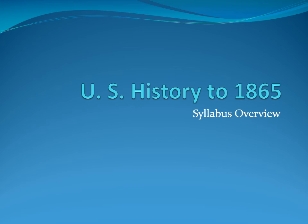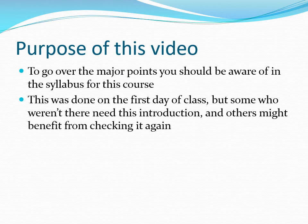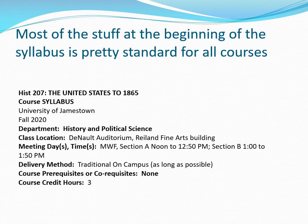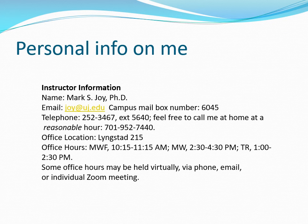First, in the syllabus, the first material is pretty much just standard: the name of the class, where it is, the department, my office hours, my office — which is Lingstead 215 — and the number of credit hours. So most of that is pretty standard. Some personal instruction material: you have my office location and my phone number.